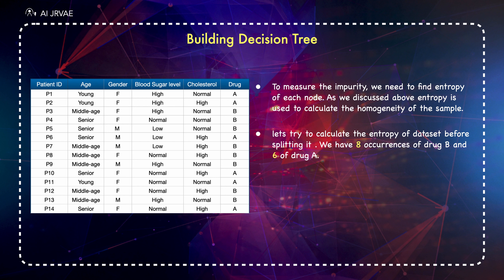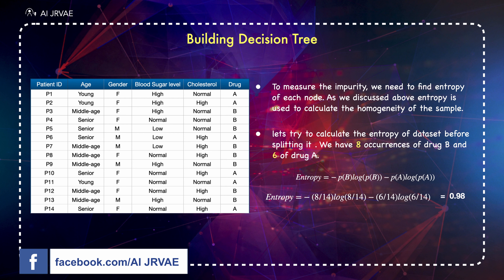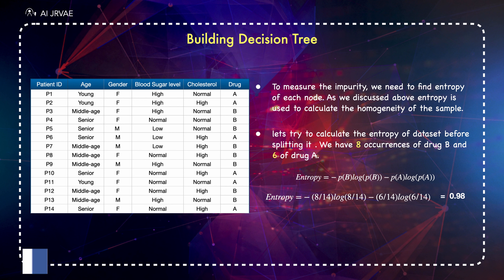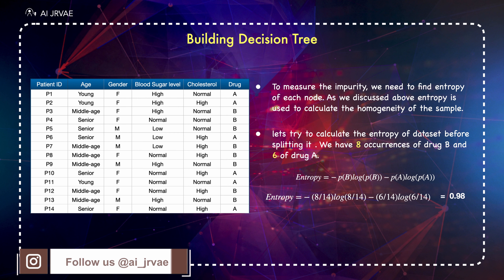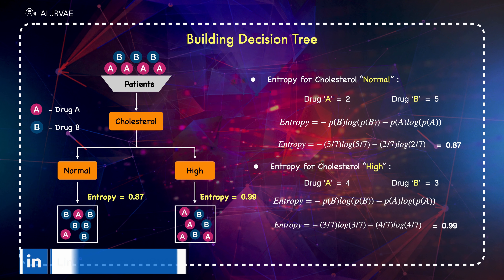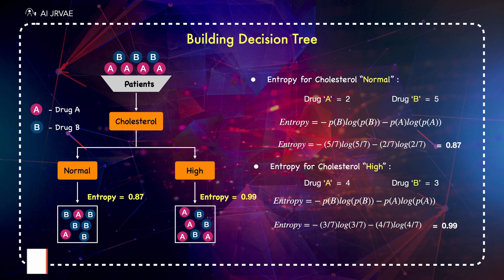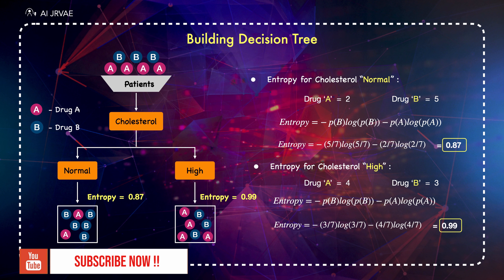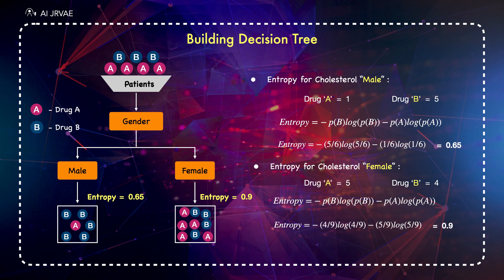Now let's try to calculate the entropy of the dataset before splitting it. We have 8 occurrences of drug B and 6 of drug A. You can plug these numbers into the entropy formula to calculate the impurity of the target attribute before splitting — in this case it is 0.98. Now, what is the entropy after splitting? Let's first select the cholesterol attribute and see how the data gets split. We can calculate the entropy of this node based on the distribution of drug A and B, which is 0.87 and 0.99. If we choose the gender attribute, the entropy for one node is 0.65, while the entropy on the other branch is 0.90.